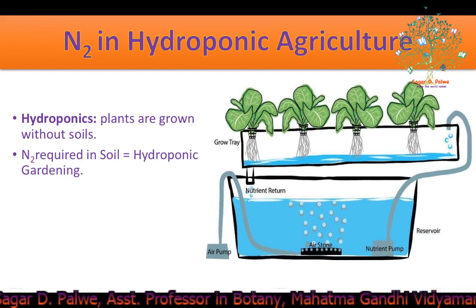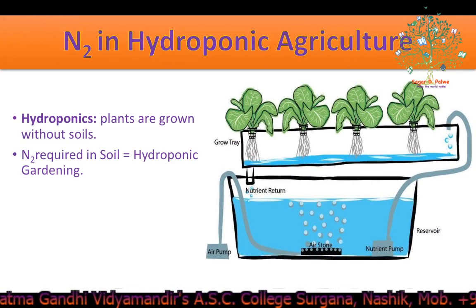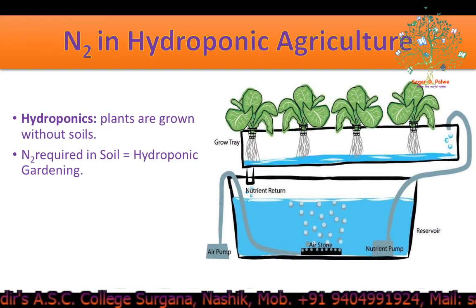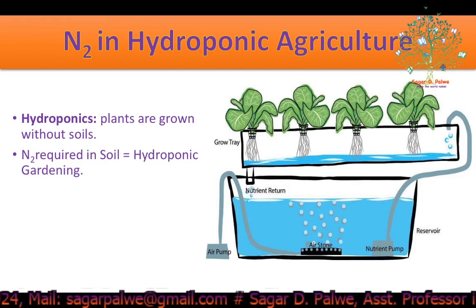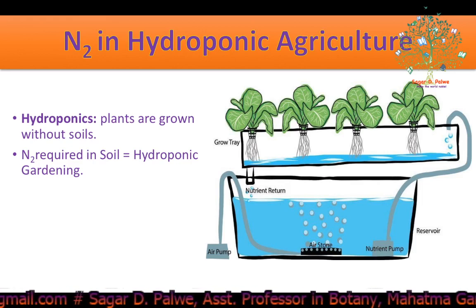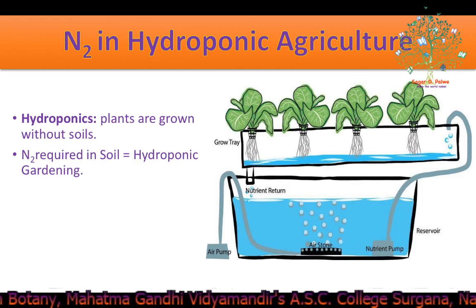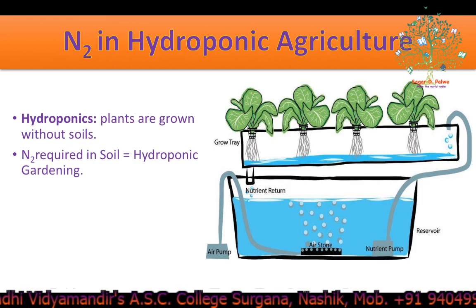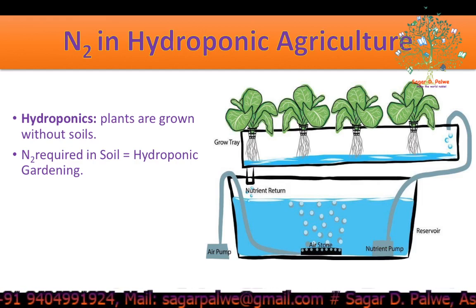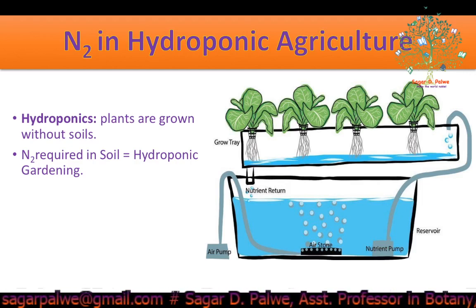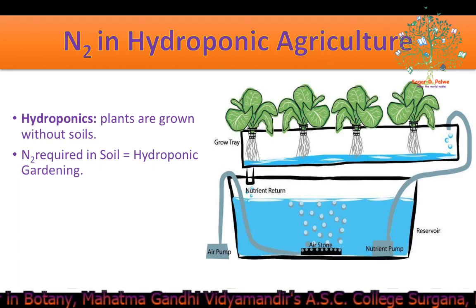Nitrogen is increasingly used in hydroponic agriculture, where plants are grown without soil, using water. It is important to note that the exact amount of nitrogen required in soil and hydroponic gardening is the same. The use of nitrogen fertilizers enhances its availability to plants in both hydroponic and soil gardening. That's all — thank you so much for your kind attention.